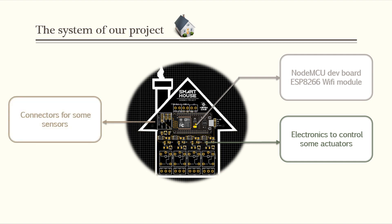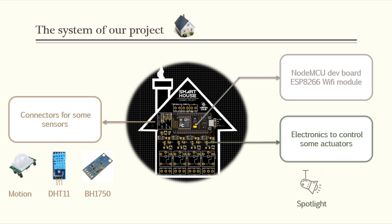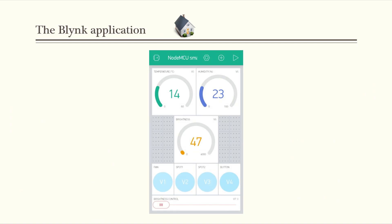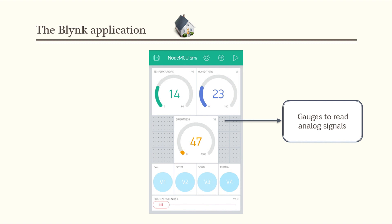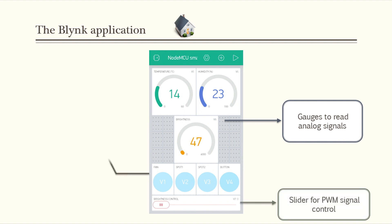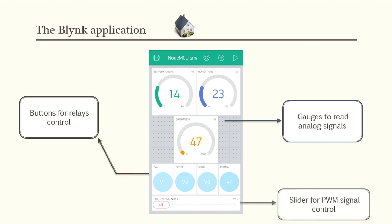About the sensors, we will use a motion sensor for alarm detection, a DHT11 for temperature and humidity measuring, and a BH1750 for light sensing. About the actuators, we will control some 220V AC bulbs and a DC fan. All these actuators will be controlled through an Android app developed using the Blynk application, where I inserted some gauges to read the analytic values from the sensors and placed some buttons and sliders to control the outputs.